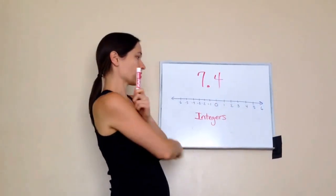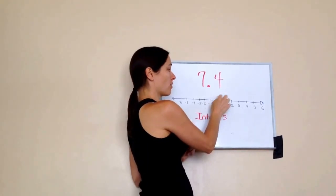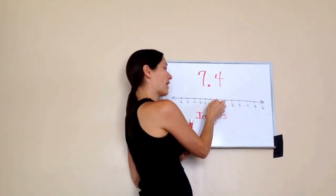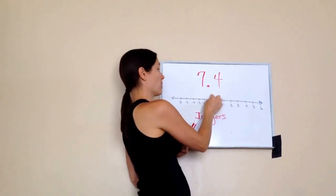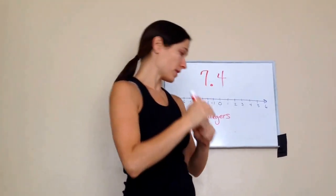And so the way it looks on a number line is from zero, how many ticks is it to get to 3? 1, 2, 3. From zero, how many ticks is it to get to negative 3? 1, 2, 3. So they're the same distance from each other from the origin. Get it?